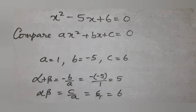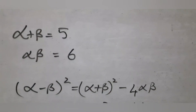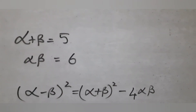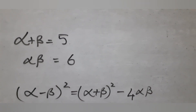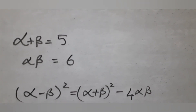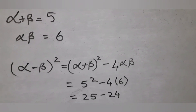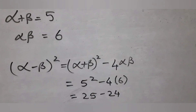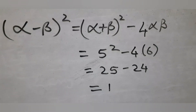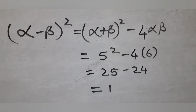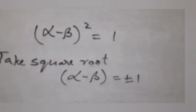Now use (α - β)² = (α + β)² - 4αβ. Substitute the values for α + β and αβ and find the value of (α - β)². So (α - β)² = 1. Take the square root to get α - β = ±1.